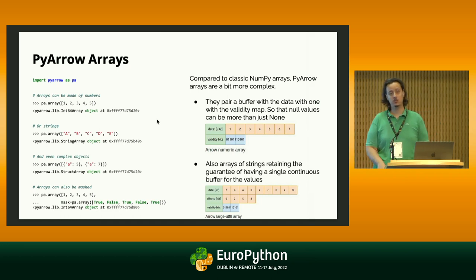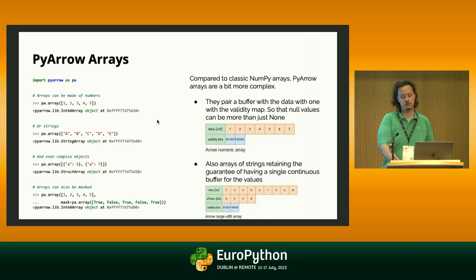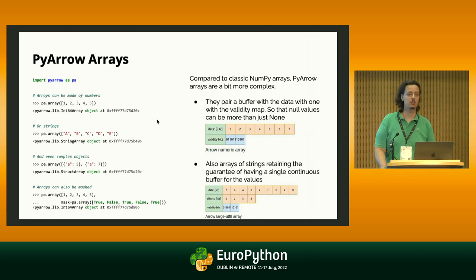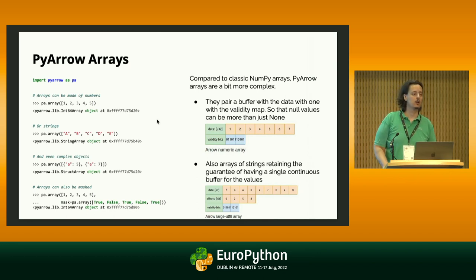The in-memory format for strings is far more optimized compared to what NumPy uses. The main difference is that PyArrow keeps a single continuous buffer for strings. So if you need to do any lookup, transform the data, or run any operation on all the entries in the array, you don't have to jump across multiple different Python objects resolving references, but can just scan the array and perform the computation, also leveraging vectorized optimizations like SIMD and things like that.